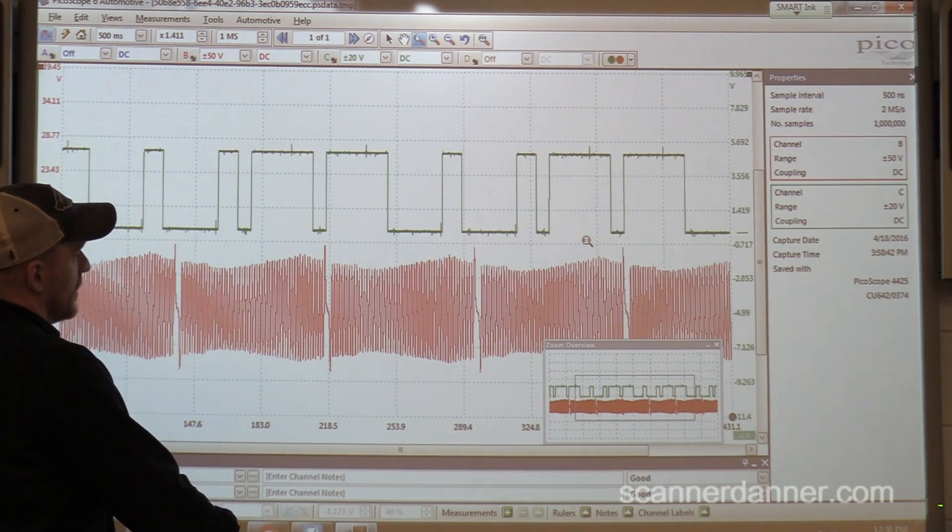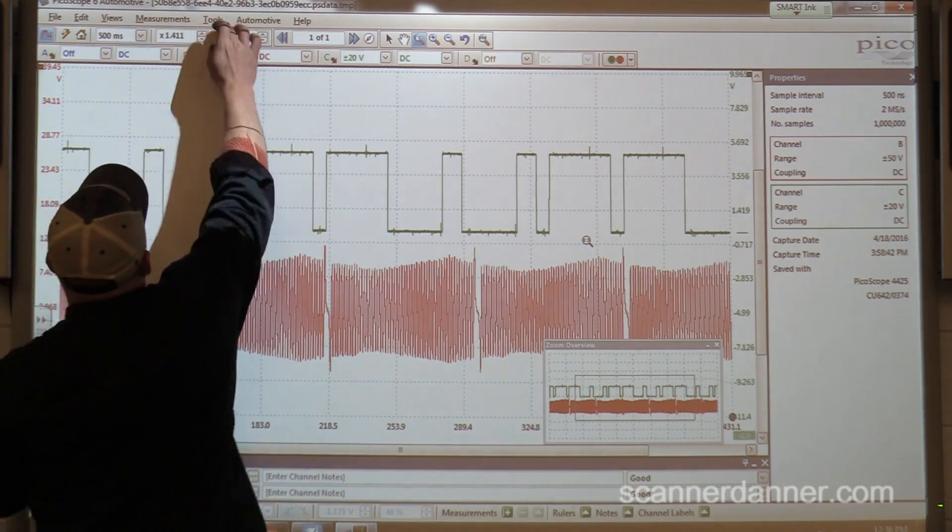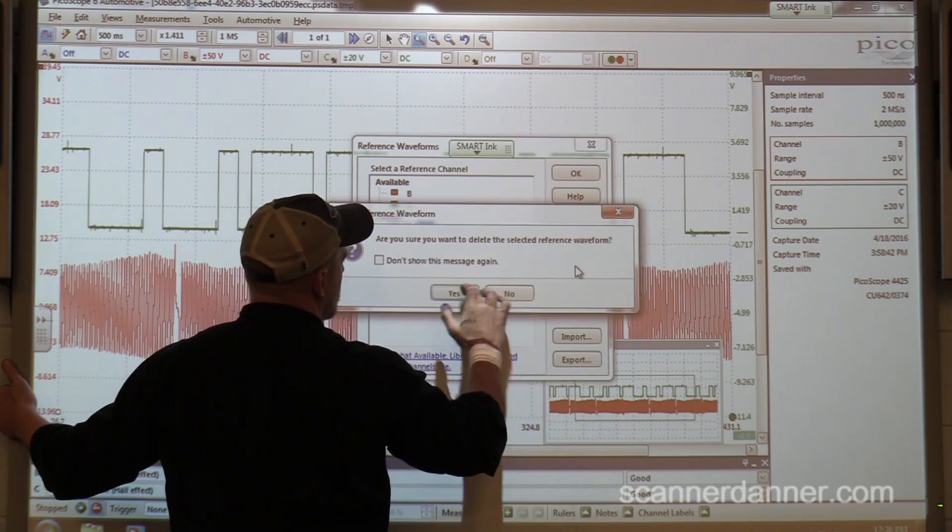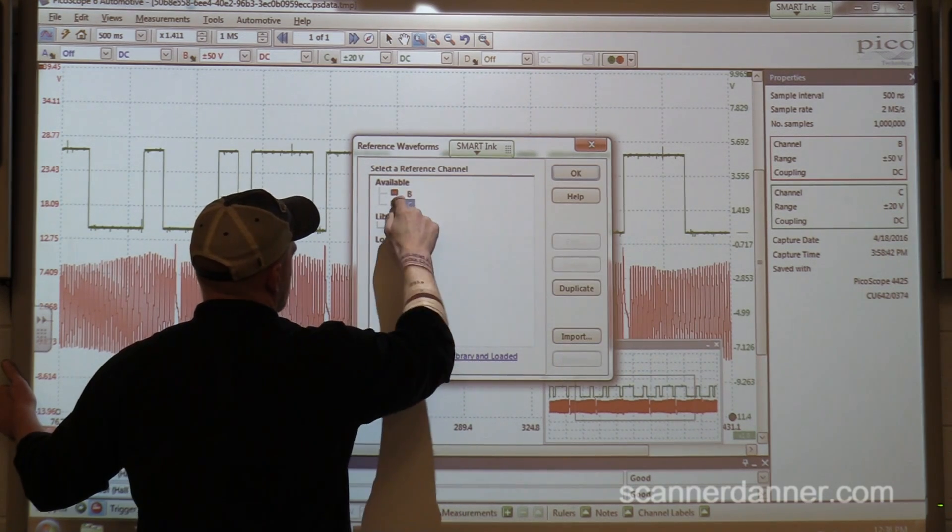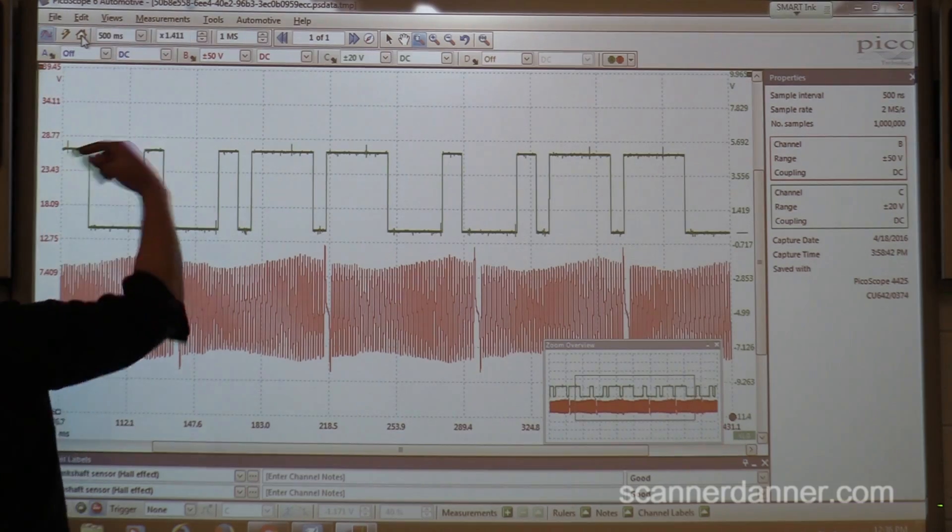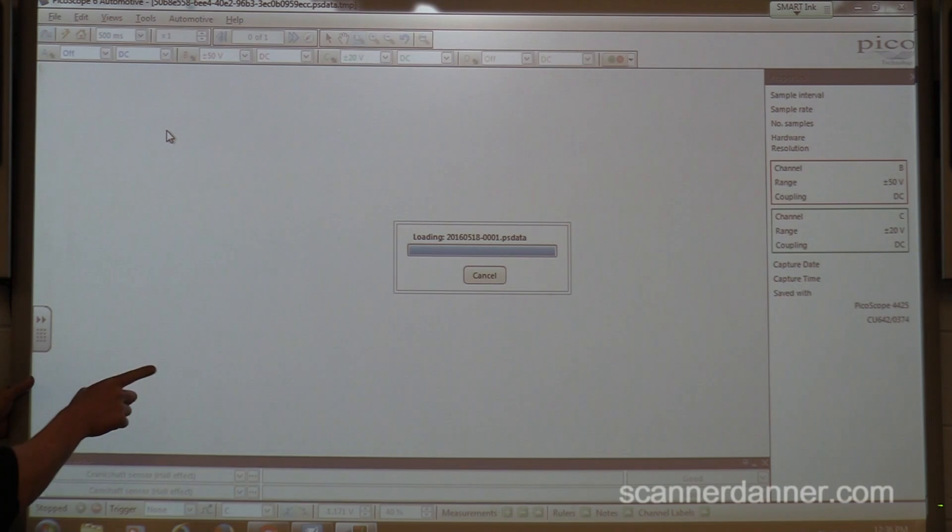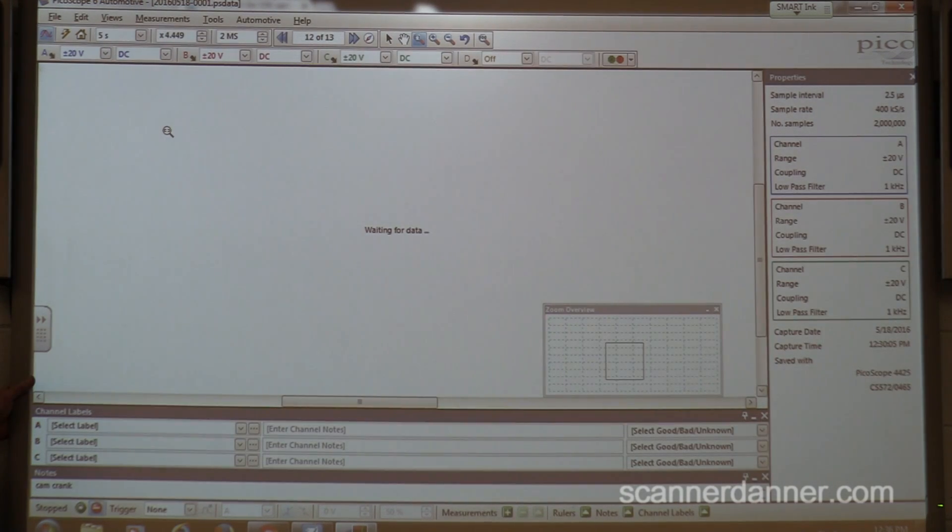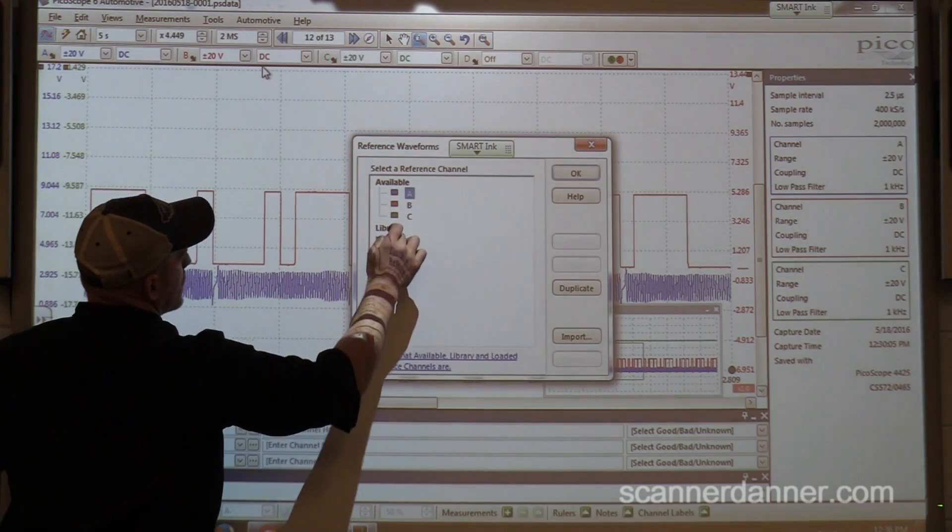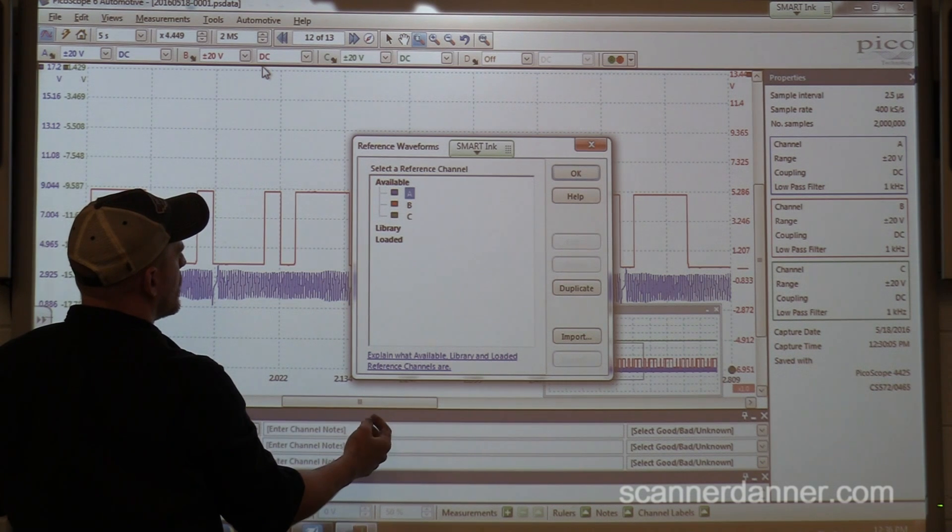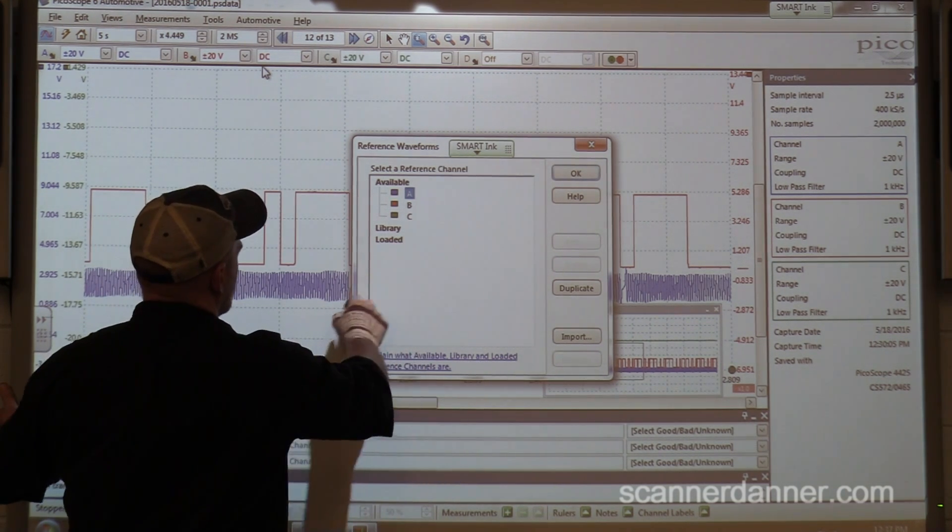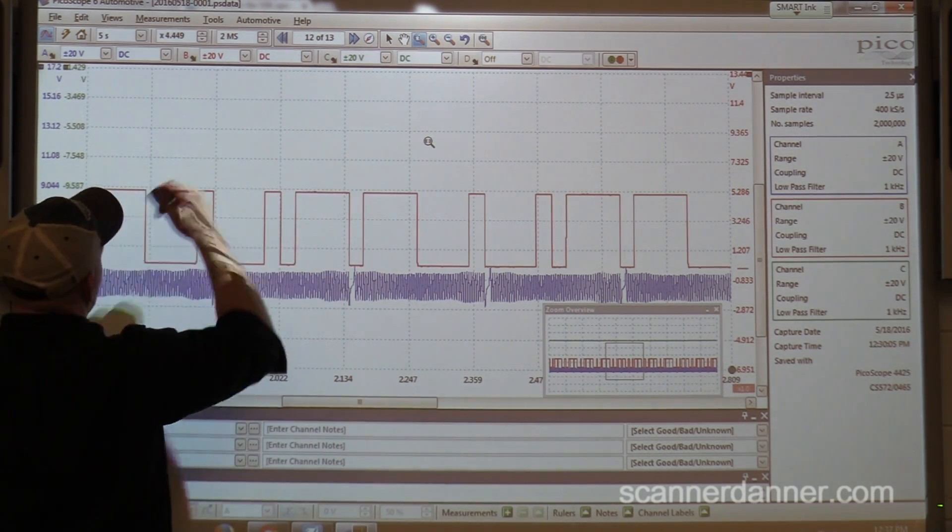What would be helpful for us right now is to take a reference waveform. Do you remember how to do that? We go tools, reference. These are the ones we made yesterday on a car we did together. We'll take these two channels, double click B, double click C, and then I just made reference waveforms for that. Now what we can do is we can open our folder. This is us right here, the one we just saved.